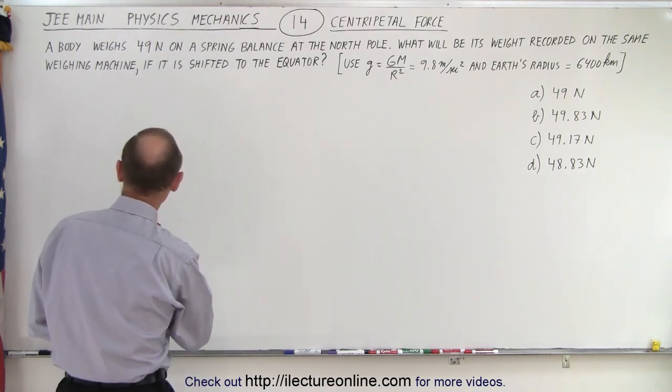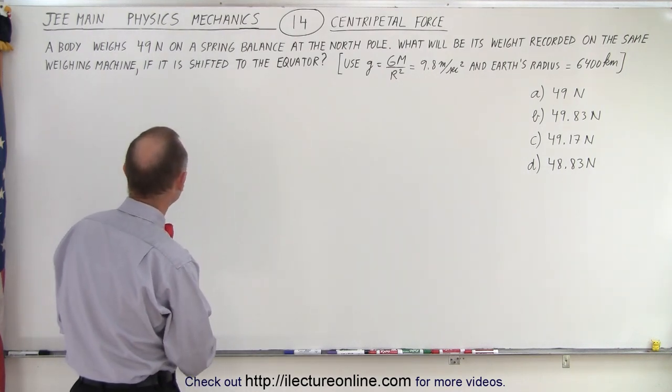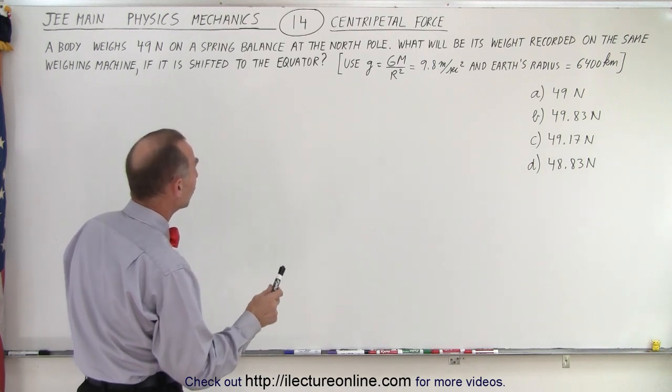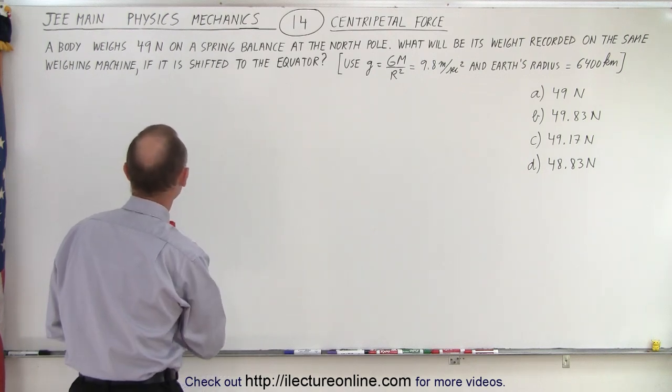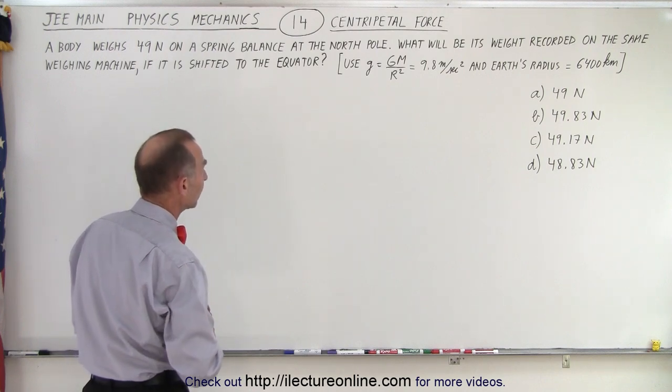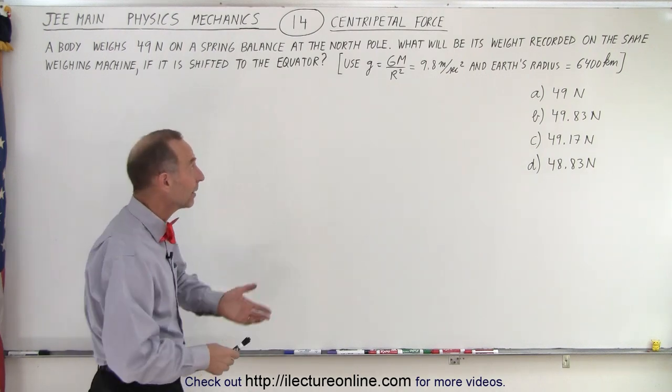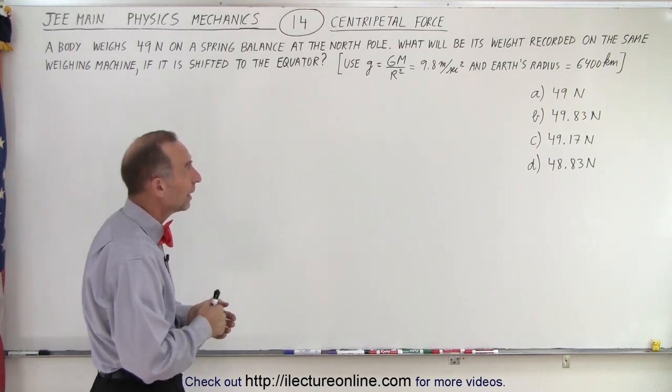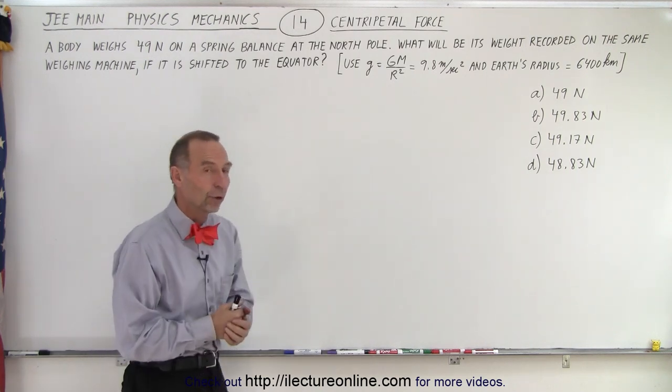So it says here, a body weighs 49 Newtons on a spring balance at the North Pole. What will be its weight recorded on the same weighing machine if it's shifted to the equator? And they give us some information. They tell us that the acceleration due to gravity is 9.8 meters per second squared and that the Earth's radius is 6,400 kilometers.